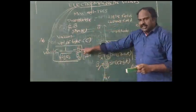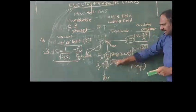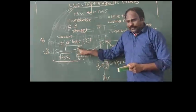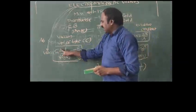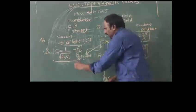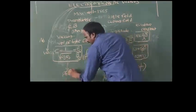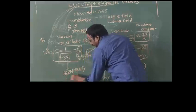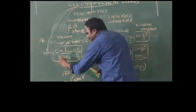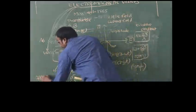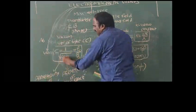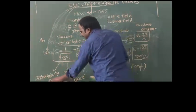E₀ indicates amplitude of electric field and B₀ indicates amplitude of magnetic field. The ratio between the amplitude of the electric field and the amplitude of the magnetic field gives the velocity of light, which is equal to 1/√(μ₀ε₀). Here ε₀ is the permittivity of free space used in electric field, and μ₀ is the permeability of free space used in magnetic field.